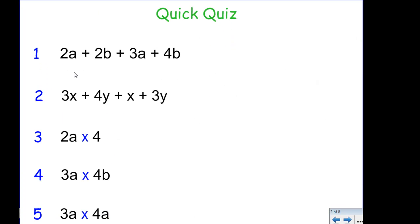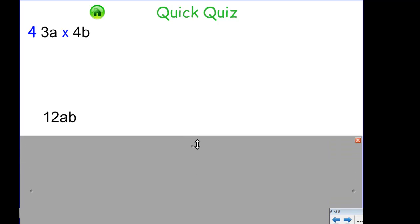In a particular class we might not want to go from 1 to 2 - we might skip 2 and 3 and say alright, let's go to 4. Okay, and reveal the answer. 3a times 4b is 12ab.